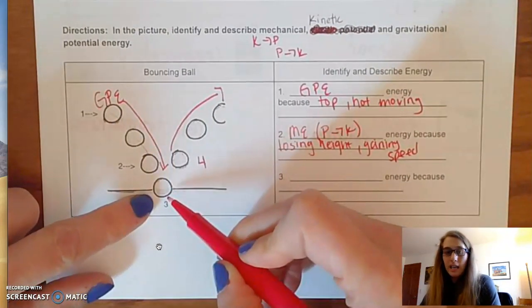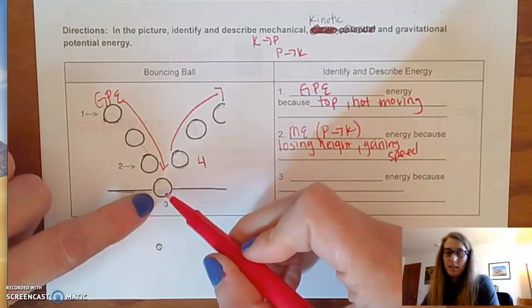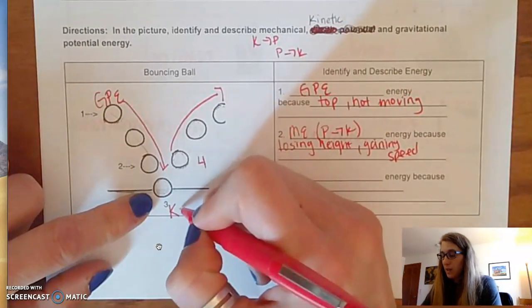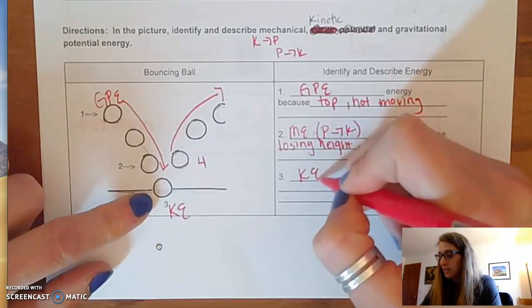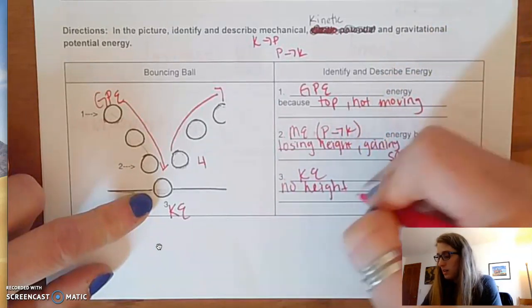Then number three, at the bottom of its bounce, no height, all movement. Hopefully you realize that was kinetic energy, right? No height movement.